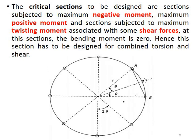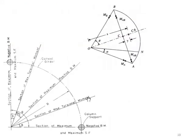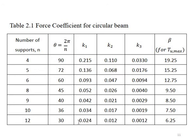The critical section is critical. The critical section is to be designed for the maximum negative moment at the support, the maximum positive moment, and the section subject to maximum twisting moment with shear force. At the contraflexure point, the bending moment is zero, hence this section has to be designed for combined torsion and shear force. This is the section of maximum bending moment, the shear force section, and the section of maximum torsional moment. The contraflexure point is approximately 30 degrees. The section of maximum positive moment is at the middle, with corresponding shear force.